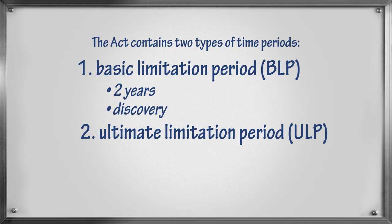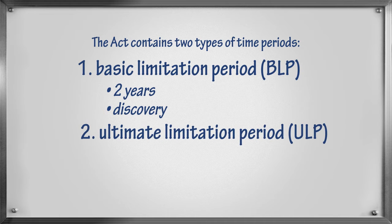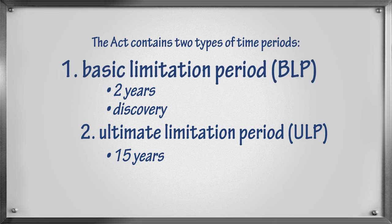In some situations, a person may not discover their claim right away. If this happens, time does not start to run in the Basic Limitation Period. A person has until the expiry of the Ultimate Limitation Period, which is 15 years, to discover their claim and start a civil court proceeding. Once a person discovers their claim, time in the Basic Limitation Period starts to run.